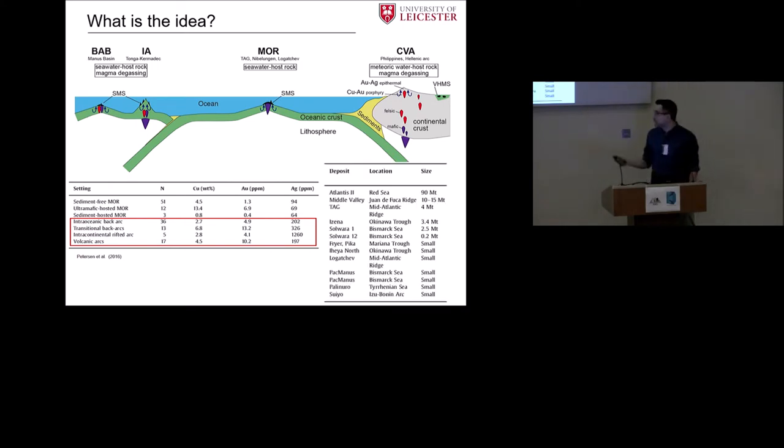However, the downside may be that when we compare them, for example, with Atlantis 2 or with TAG, most of them are just far smaller than the mid-ocean-ridge systems. But still, they have quite high grades, so if they get interesting, what we need to understand is really why do we have those high grades, what controls them.